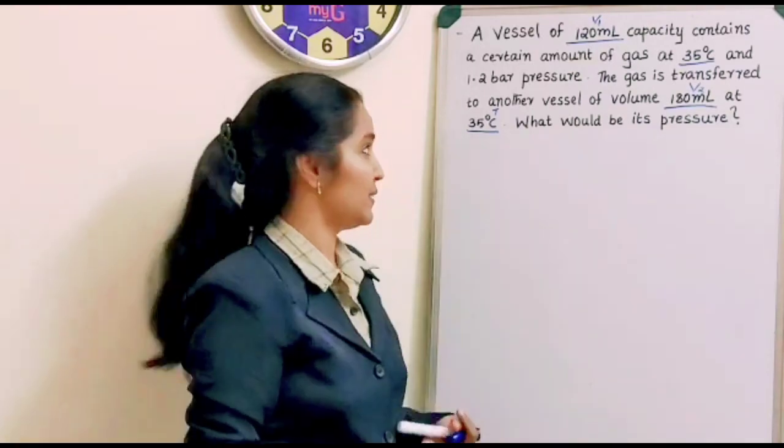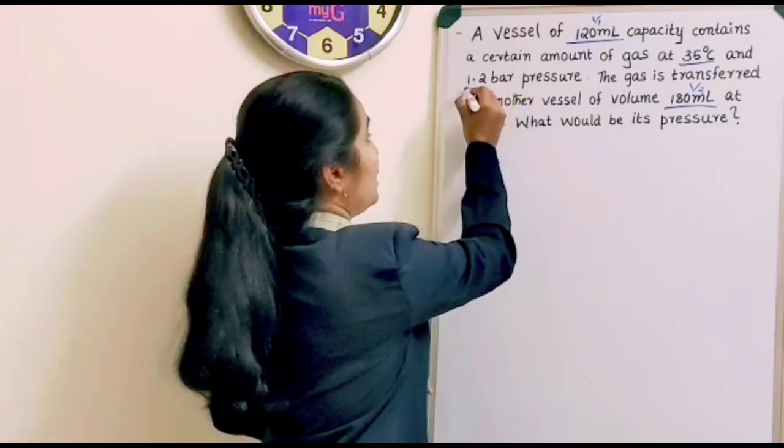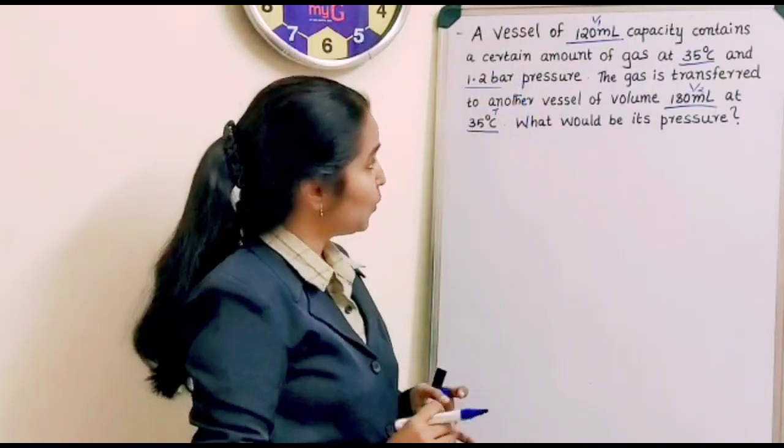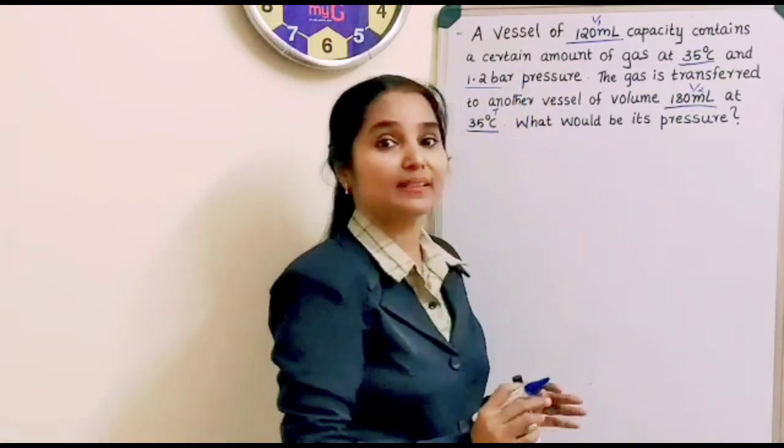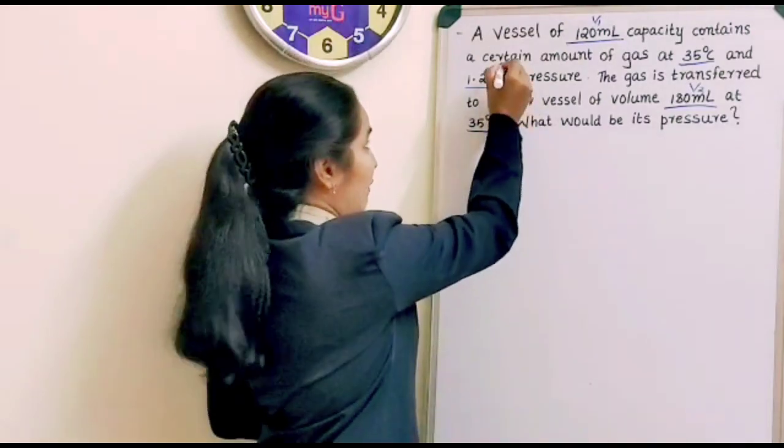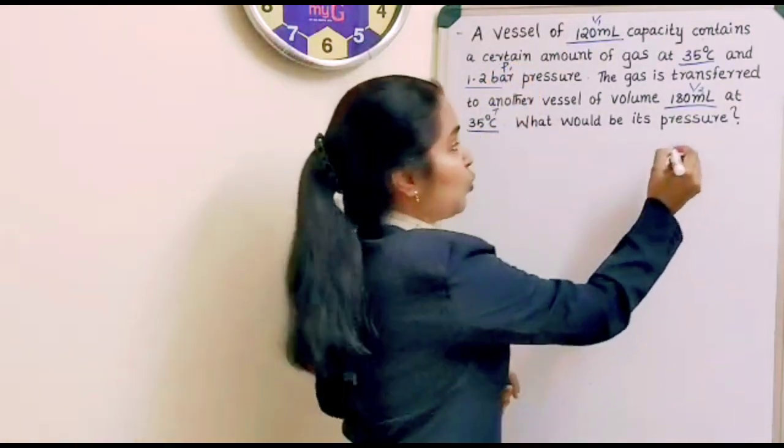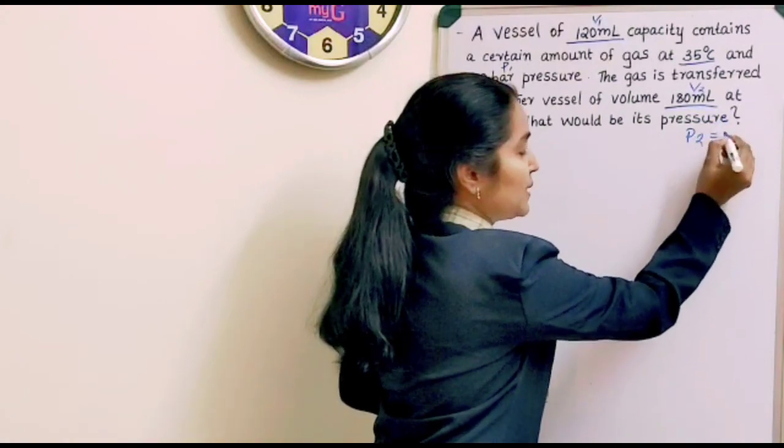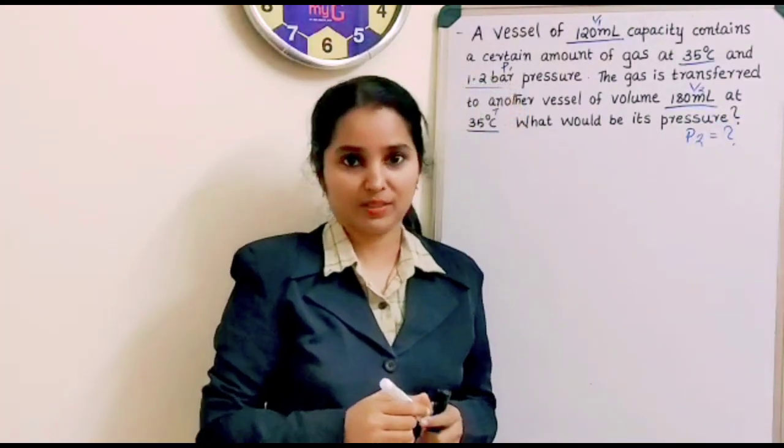Now what about the pressure? We will see. Initial pressure was 1.2 bar. And then what would be the final pressure? That is the question. So P1 we have it here and then what is P2 is the question. So what is our question? We have to find out the final pressure.